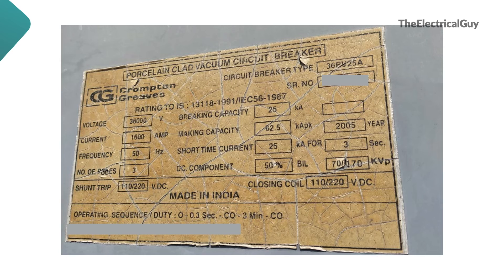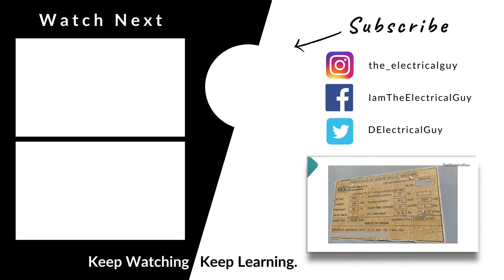So we have covered all the parameters which are mentioned on the nameplate of a vacuum circuit breaker. If you are interested in knowing the nameplate details of all substation equipment, you can check out the playlist — the link is in the description. If you are new to this channel, my name is Gaurav J and I post videos related to electrical engineering with the easiest explanation. If you found the video helpful and learned something new today, please like this video.